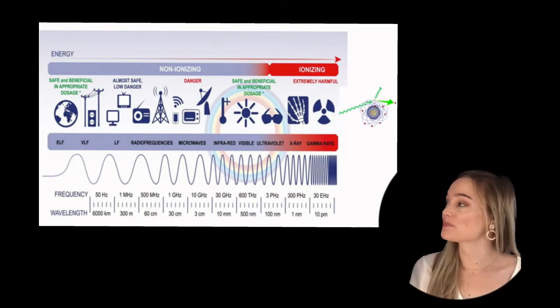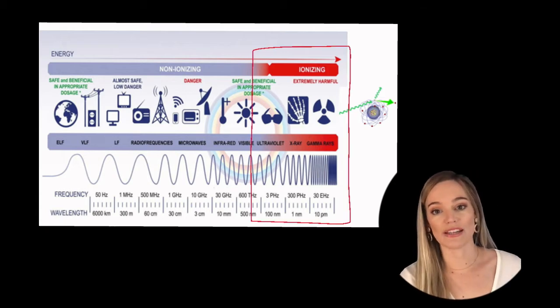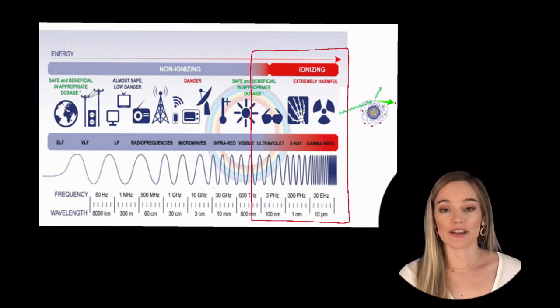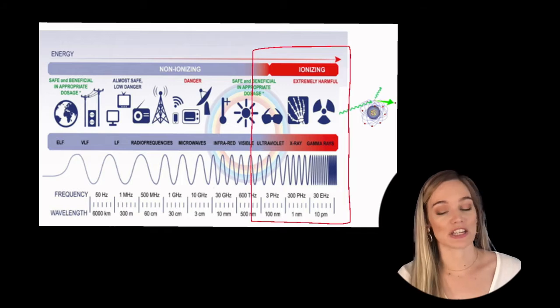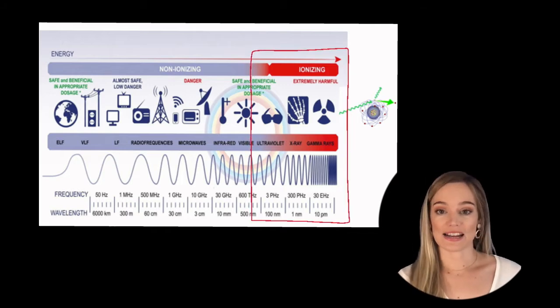Well if you look at the image, if the wave starts to fall in the red area, meaning it's got a higher frequency and it carries higher energy, it is called ionizing energy.